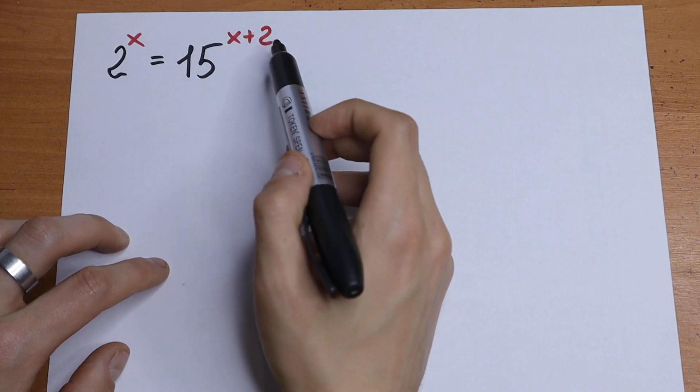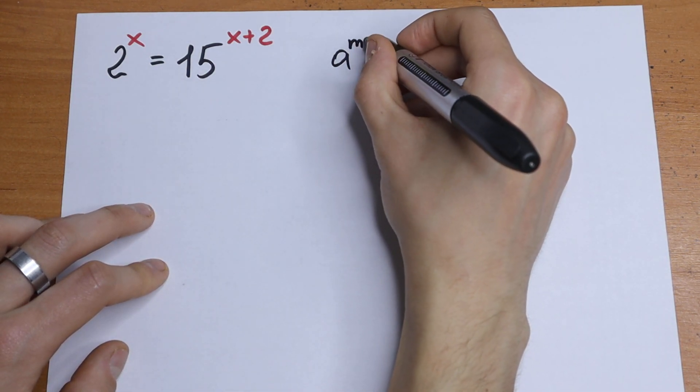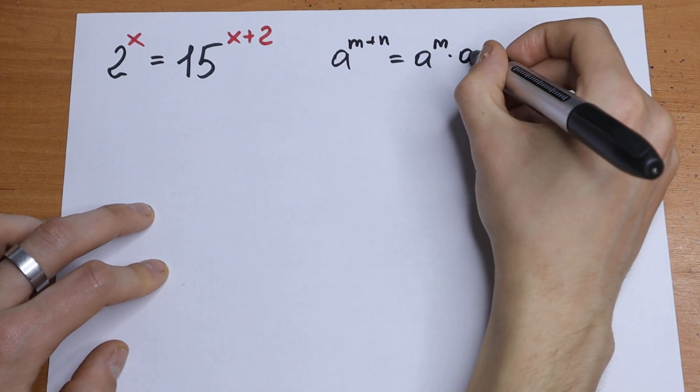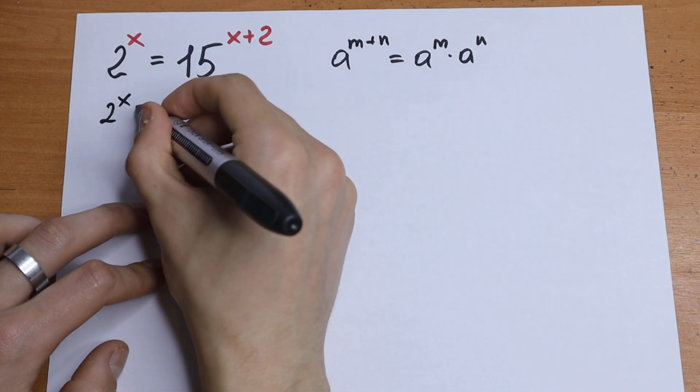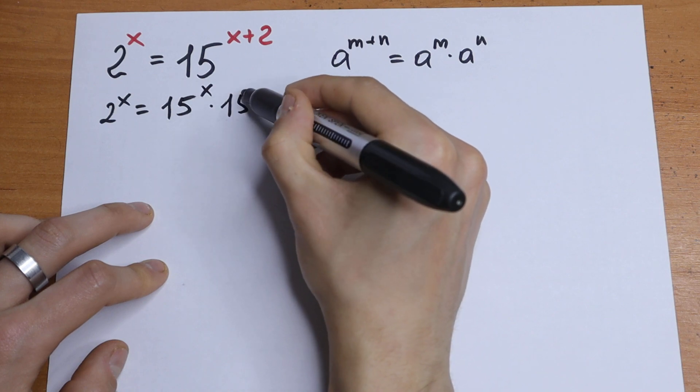For sure we can break this x plus 2 power, because we know if we have a to the power m plus n, we can break this as a to the power m times a to the power n. A really good case, we will have 2 to the power x equal to 15 to the power x times 15 square.